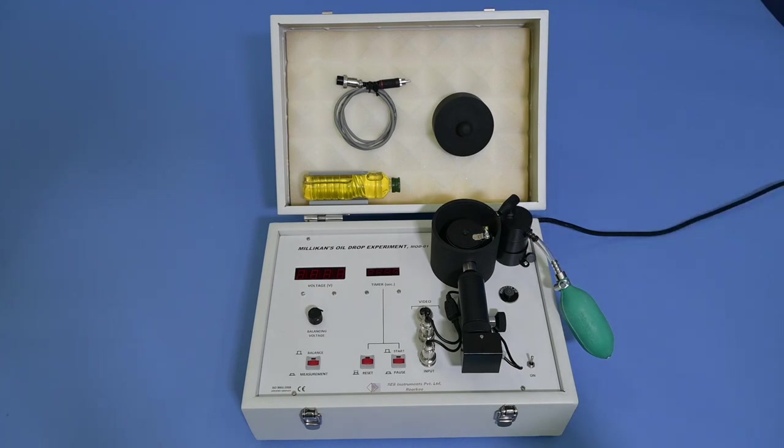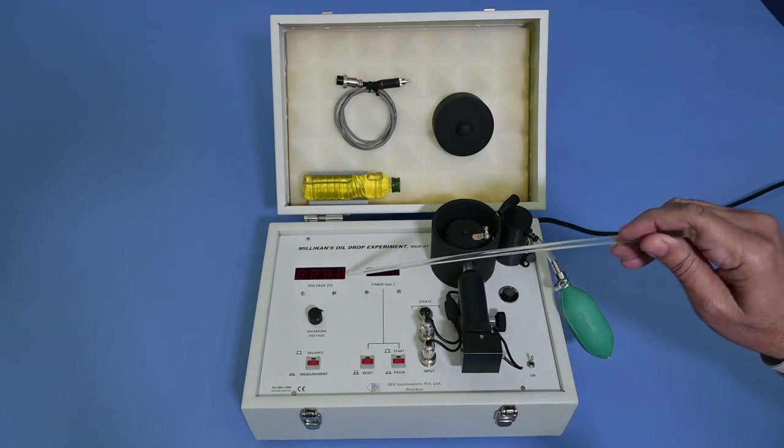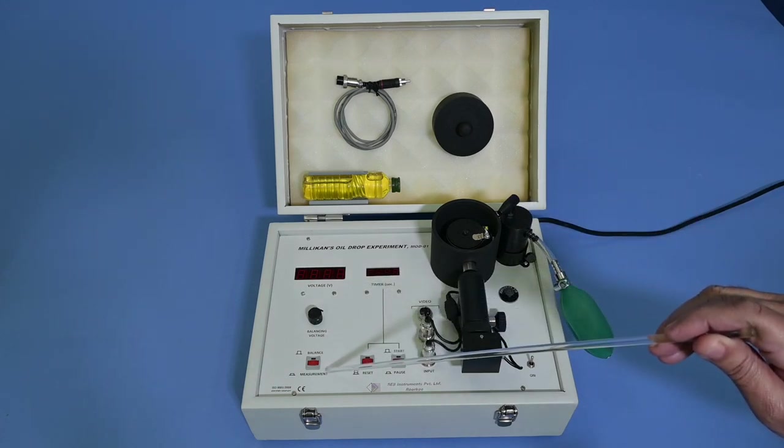An atomizer with oil container, focusing pin, CCD camera, a time counter of range 0 to 999.9 seconds. This is operated with pause and start button. A variable voltage range 140 to 800 V, controlled by a knob and balance measurement button.